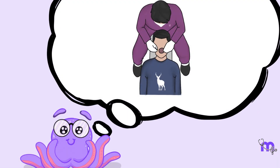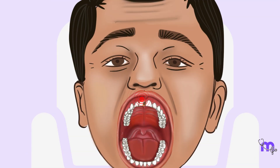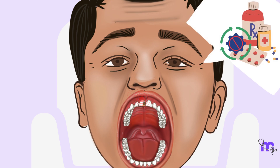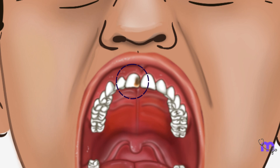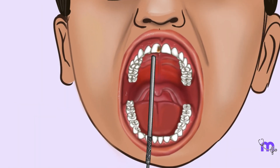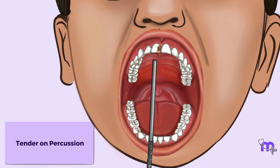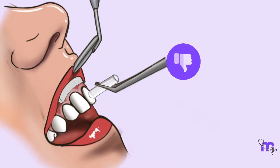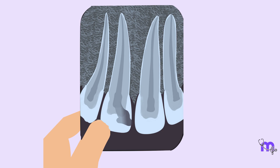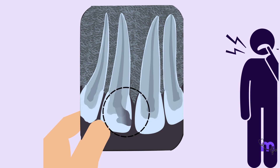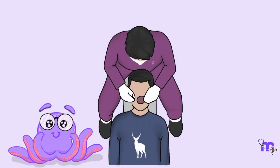Let me tell you about an interesting case that I treated. A patient with severe pain in his upper central incisor was reported at my practice. He said that the pain didn't resolve on taking medications and that there had been blackish discoloration on the tooth for the past few months. On clinical examination, the tooth was tender on percussion and did not respond to pulp vitality tests. On radiographic assessment, I realized that the caries had extended to the pulp, which demanded an immediate endodontic intervention.